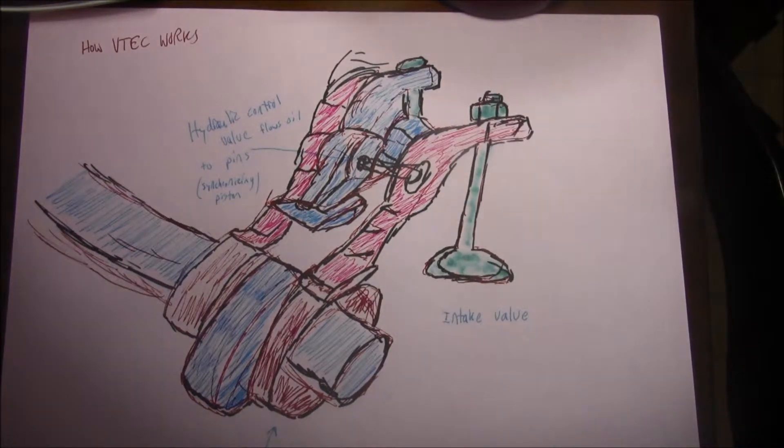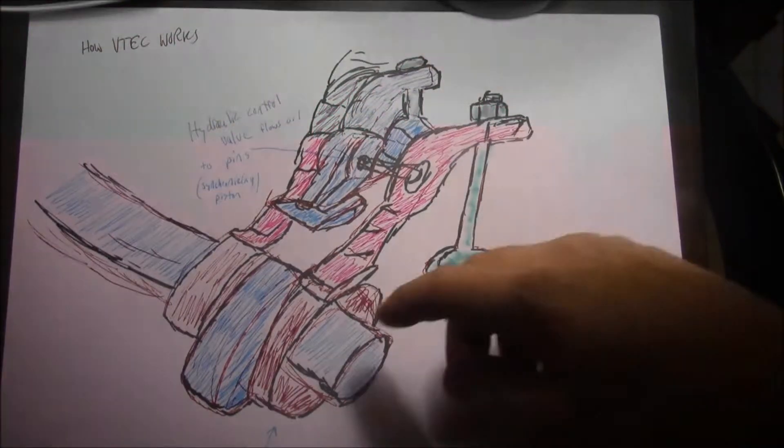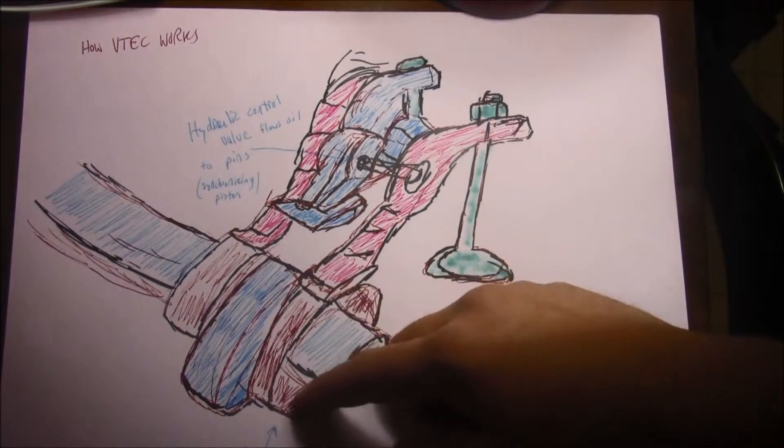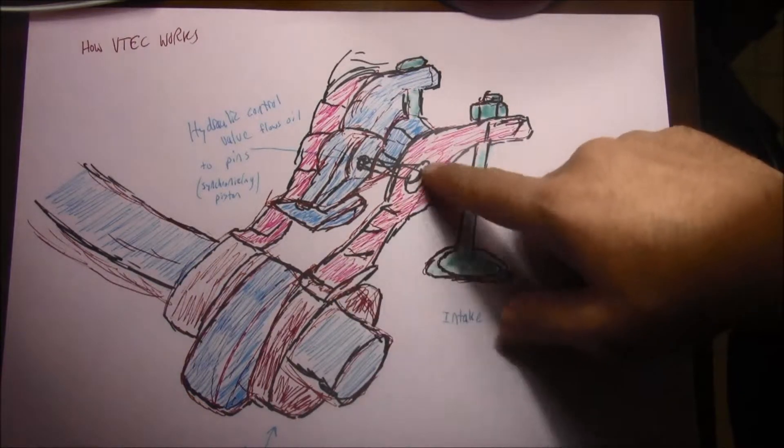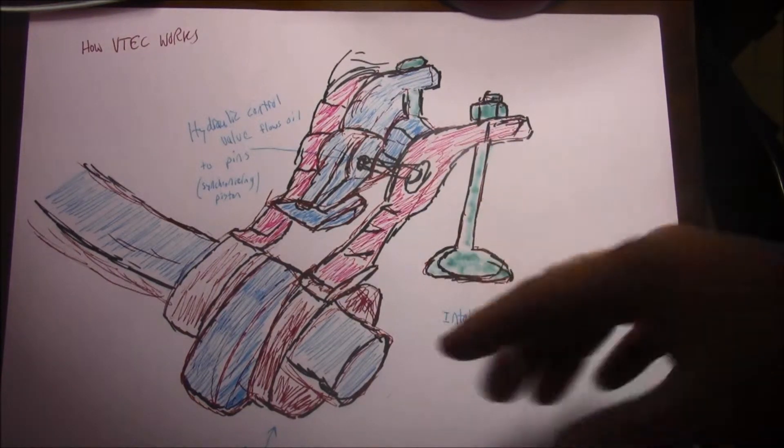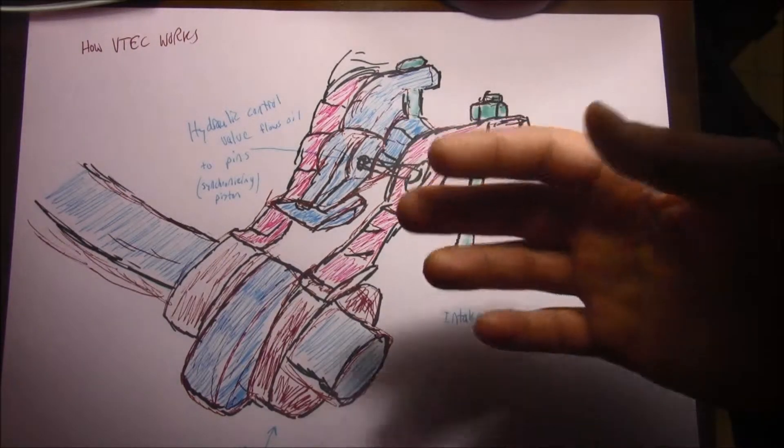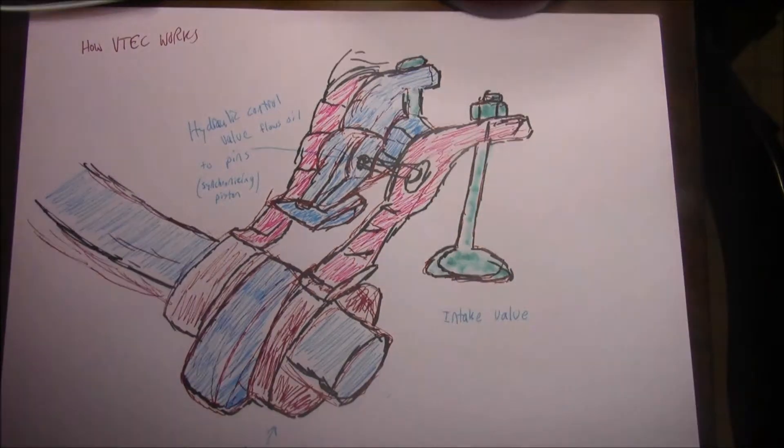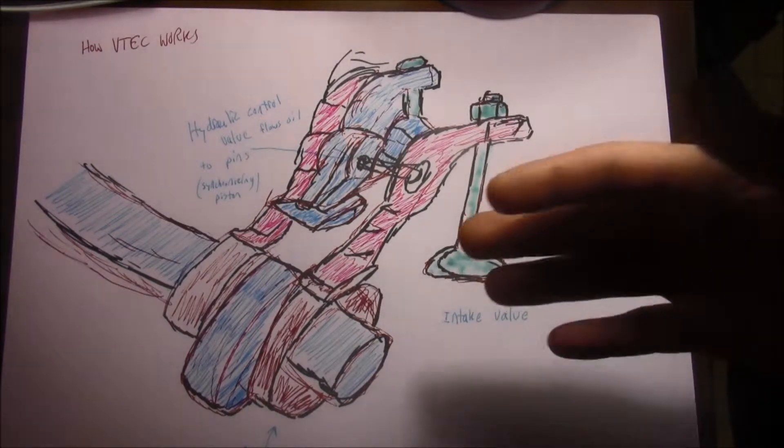In normal everyday driving under 4,500 RPM, these are moving around and around, pushing up your rockers and moving your intake up and down. This is great for low torque, strong acceleration. Now when VTEC kicks in, there is a hydraulic control valve.